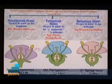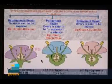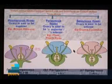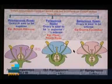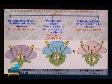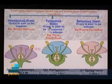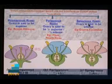Flowers are also classified based on the position of the ovary in the thalamus. We know the four floral whorls: calyx, corolla, androecium, and gynoecium. This classification is based on the position of the ovary, which is the basal part of the gynoecium attached to the fourth node. The flowers are classified into three types: hypogynous flower, perigynous flower, and epigynous flower.